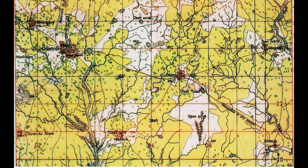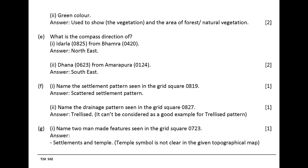What is the compass direction of Idar La from Bamra? Answer: northeast. Dhanah from Amarapura? Answer: southeast.